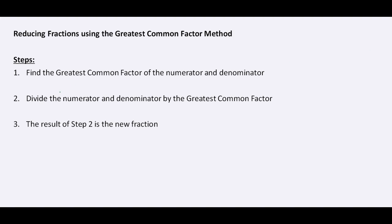Let's look at some steps. We want to first find the greatest common factor of the numerator and the denominator, and we'll divide the numerator and denominator by the greatest common factor. The result of that division becomes the new reduced fraction.